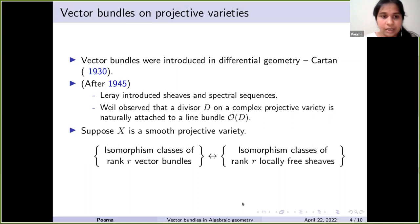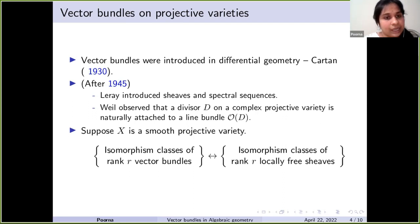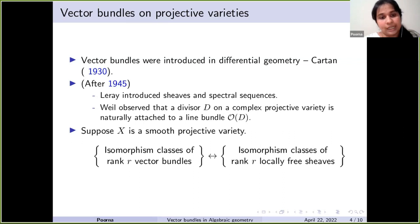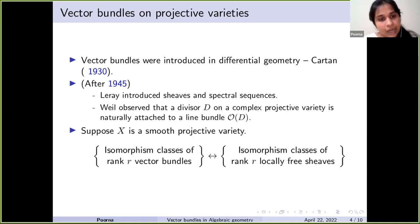Vector bundles came into picture in differential geometry around the 1930s, the time of Cartan. They became used in algebraic geometry after 1945, around the time when Leray introduced sheaves and spectral sequences. When sheaves were introduced, it was noticed that sheaves are the right objects to encode information and to get the right abstraction in algebraic geometry. Around the same time, the geometer Weil observed that a divisor D on a complex projective variety is naturally attached to a line bundle O(D).